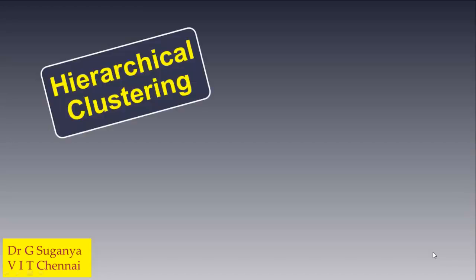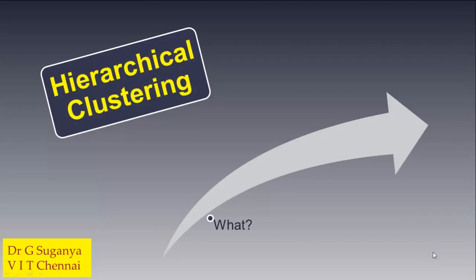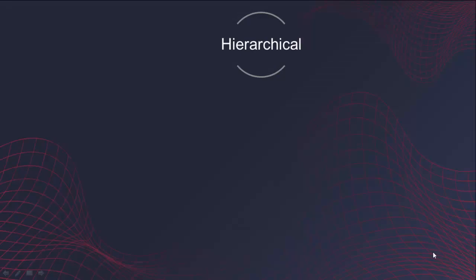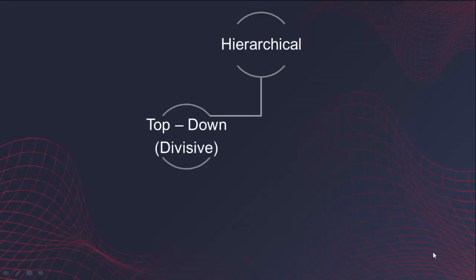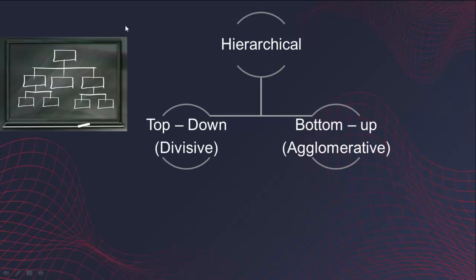Welcome learners. This session is about hierarchical clustering, an unsupervised machine learning approach. We will look at what it is, its various categories, how clustering is made on a dataset, and then implementation in Python. There are two basic categories: top-down and bottom-up. In top-down, we start from the huge dataset and try to divide it into pieces based on a distance measure until a threshold is reached. This is called the divisive approach.